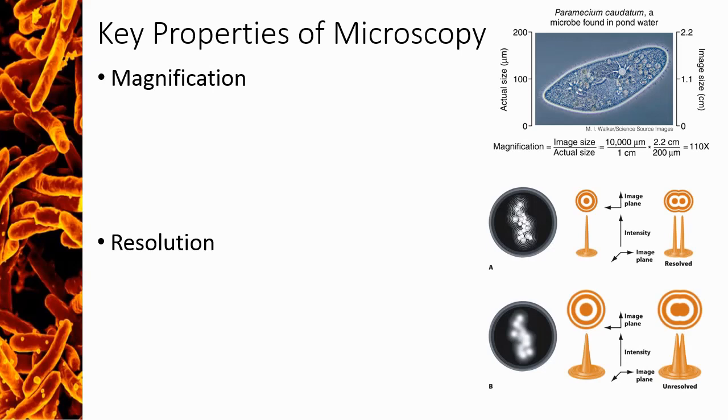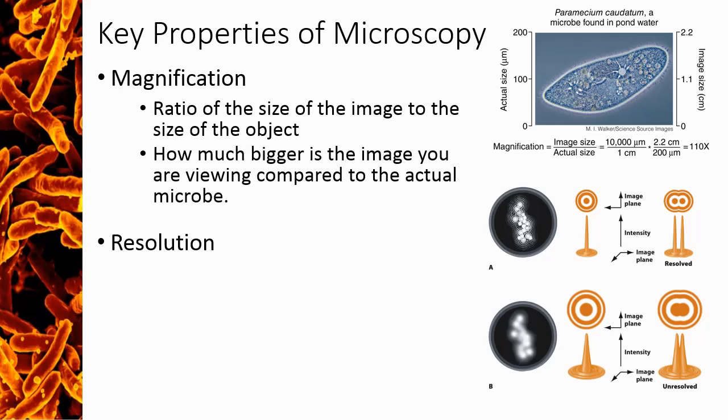Magnification just describes how much larger you are able to make an image of the object you are viewing. There are no units to magnification, so we typically just use an X to represent times bigger. For example, the image is 400 times larger than the actual organism.